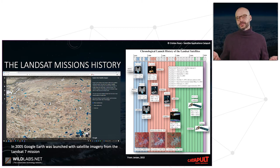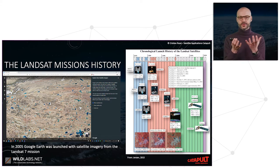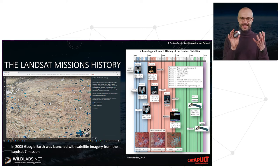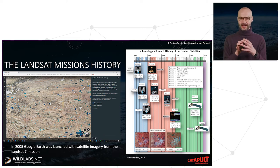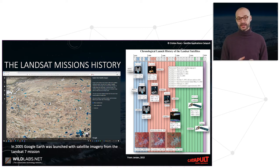Google Earth was democratizing remote sensing by providing a view of the Earth in an easy-to-use way — easy manipulation and description of the Earth — made available to the public for free, accessible simply through a web browser.